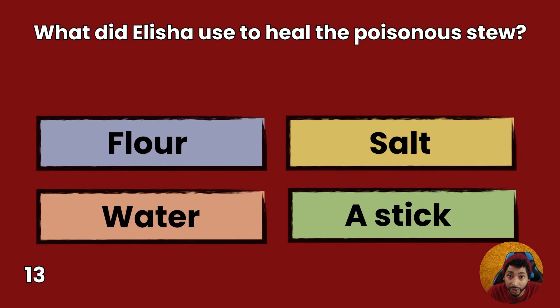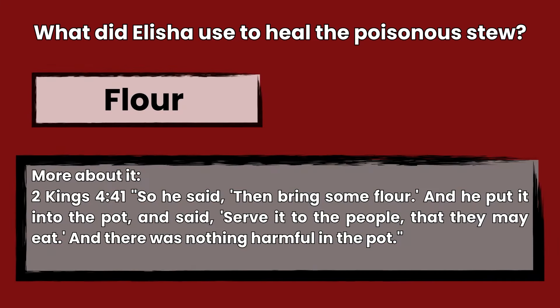Question 13: What did Elisha use to heal the poisonous stew? Flour, salt, water, or a stick? Answer: Flour. 2 Kings 4:41 — So, he said, then bring some flour, and he put it into the pot, and said, serve it to the people, that they may eat, and there was nothing harmful in the pot.